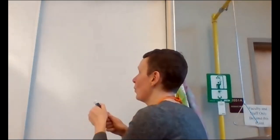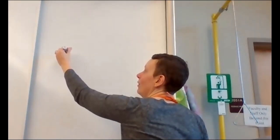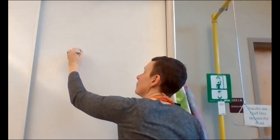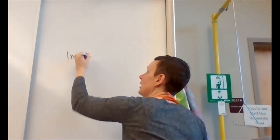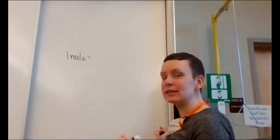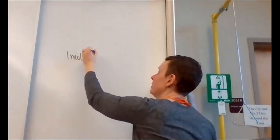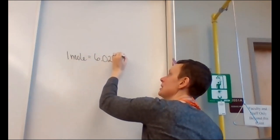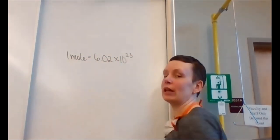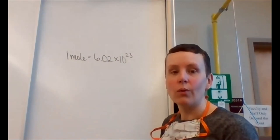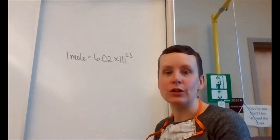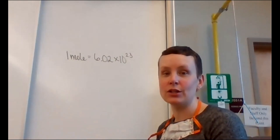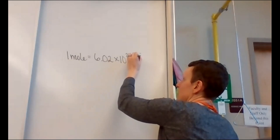The mole is not 12 — it's much more complicated than 12. One mole equals 6.02 times 10 to the 23rd things.